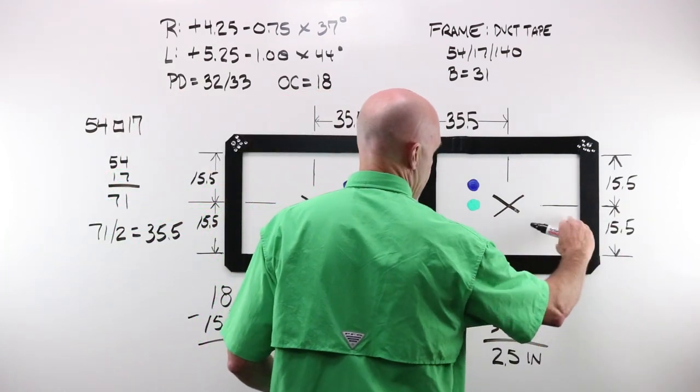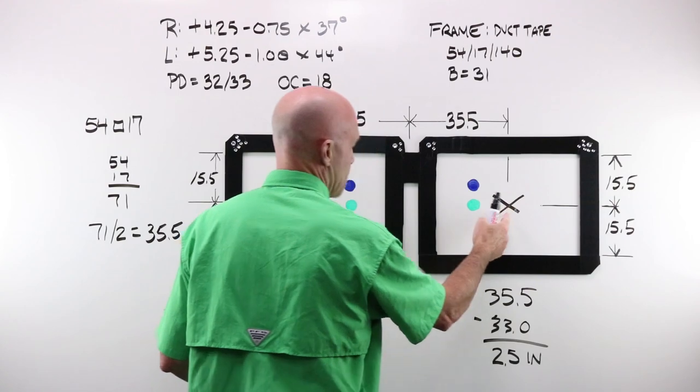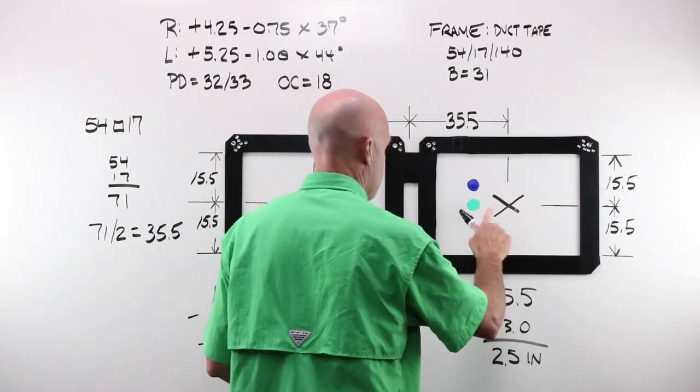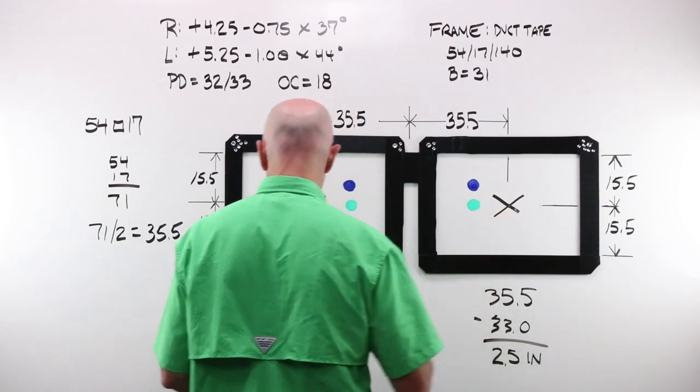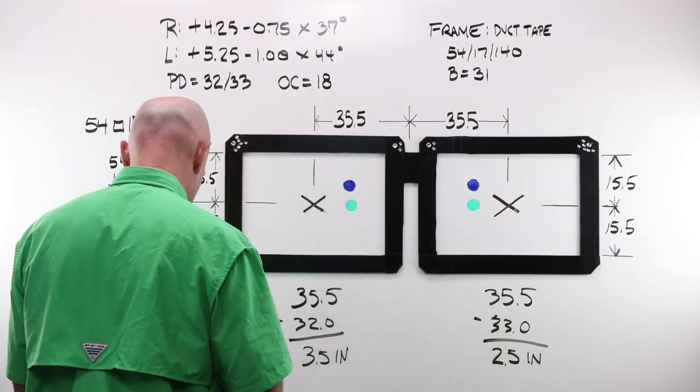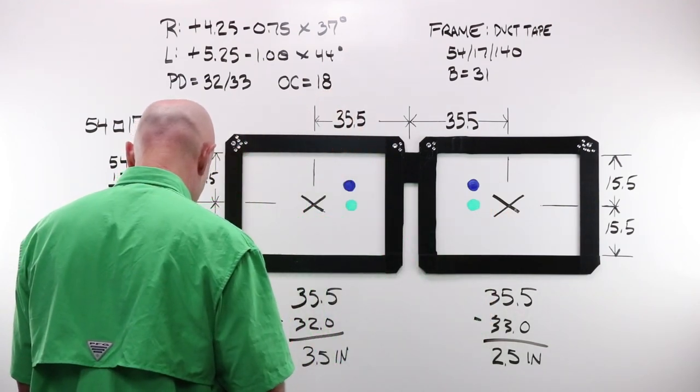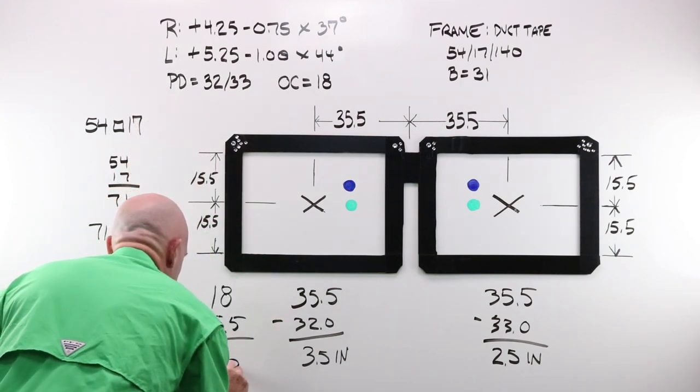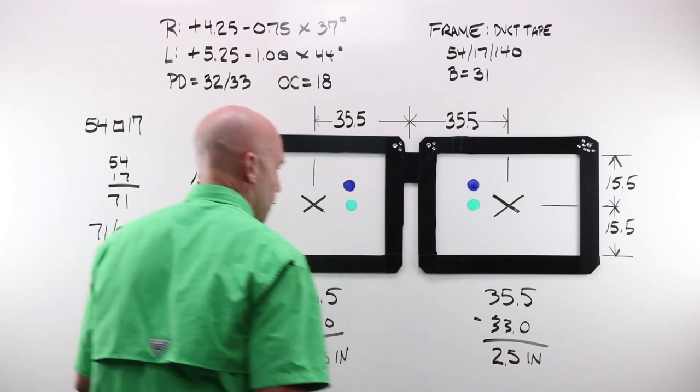So far, so good. Got an OC height of 18 minus 15.5. Where's that? That's half my B. I'm moving up from the center of my eye wire opening just as I do horizontally. I do the same thing vertically. I need to move this up. 18 minus 15.5, need to move this up, two and a half.